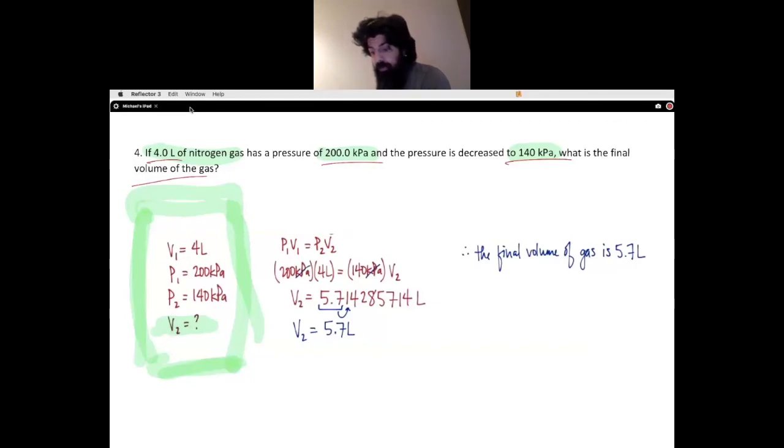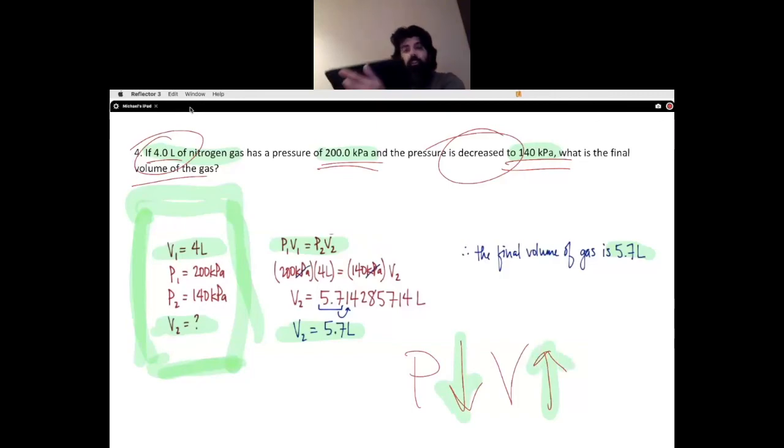If we now realize I've got volume, I've got pressure, nothing says about temperature changing, so we're assuming temperature remains the same. This is Boyle's Law. What did Boyle's Law say? If pressure is decreasing, the answer for my volume should be greater than what I started with. When I substitute into Boyle's equation, P1V1 equals P2V2, we substitute our numbers and we get a V2 that is 5.7 liters. So that 5.7 liters is greater than what we started with, which makes sense according to Boyle's Law.